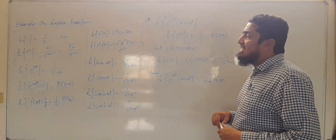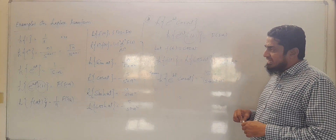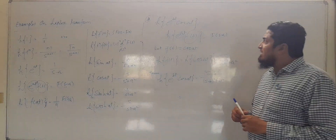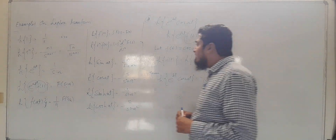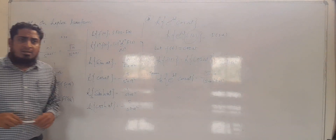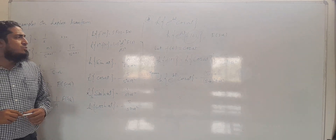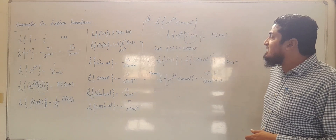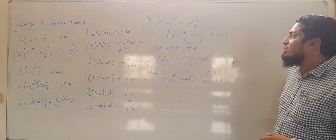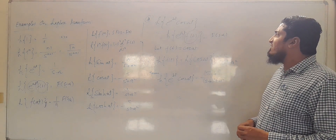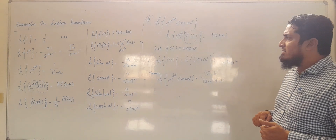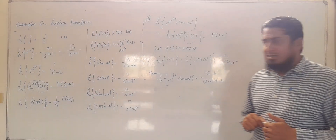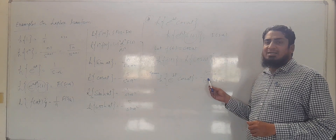In this example we have used the first shifting property. Remember: whenever you get an exponential function in multiplication with another function, you have to solve that example with the help of the first shifting theorem, by calculating the Laplace Transform of that function first, and then changing s by s minus a.